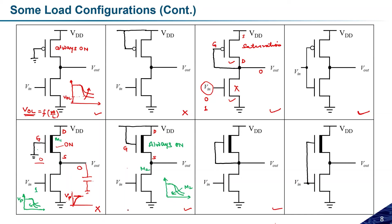If Vin equals one: the pull-down transistor is activated, and zero is directly transferred to Vout. So the output voltage becomes zero. The maximum swing is between Vp and ground. Because Vp is very low, this circuit will not behave as an inverter.